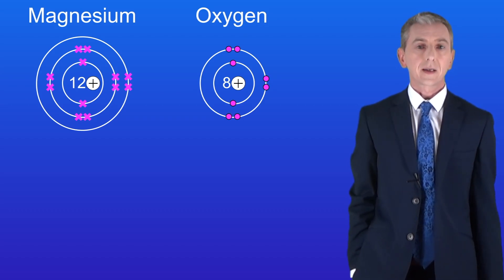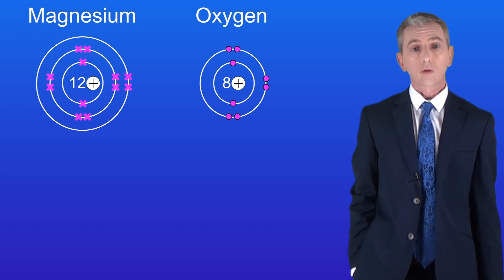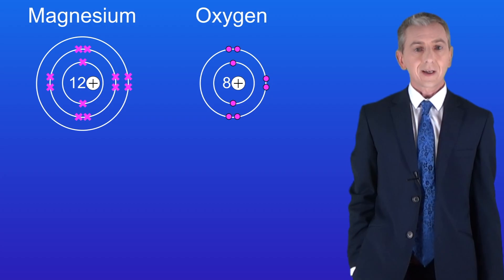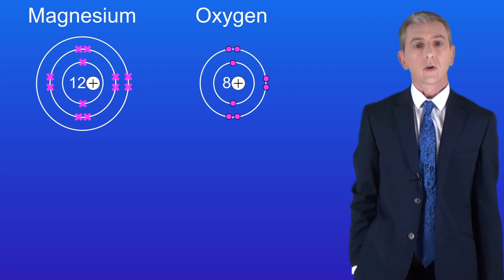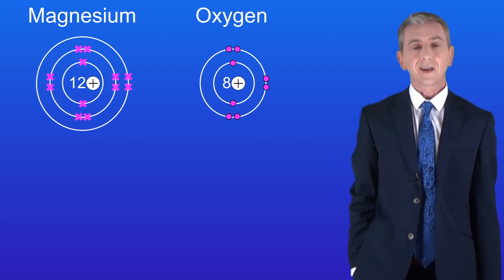You can see that the magnesium has got 2 electrons in its outer energy level just like all group 2 metals. The oxygen's got 6 electrons in its outer energy level just like all the elements in group 6.